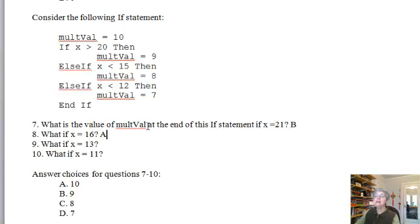What if x equals 13? Well, it's not bigger than 20, but it is less than 15. So I'm going to get the 8. That's answer C. Finally, what if x equals 11? Not bigger than 20, but it is less than 15. So I take that branch, I get the 8, and I get answer C again. It doesn't matter that this one was also true. You take the first one you come to.